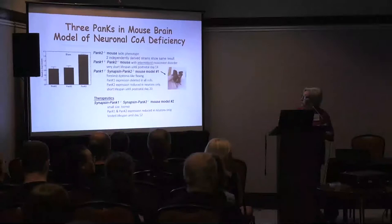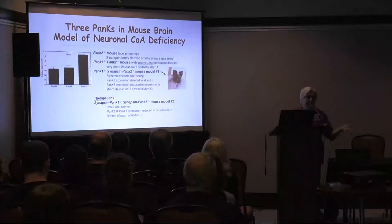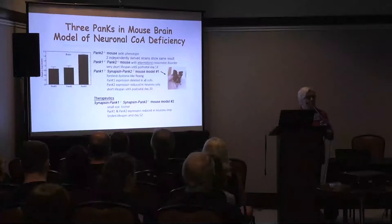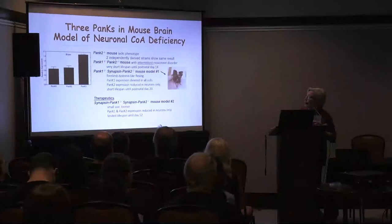We thought we were on the right track. So next we made a systemic PAN-K1 knockout — a relatively mild phenotype — combined with PAN-K2 deleted just in the brain. We did some genetic tricks to achieve that mouse, and that mouse lived longer. I'll call it mouse model number one, and that's what I'll be talking about today.